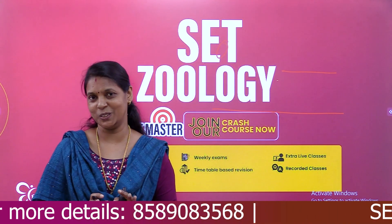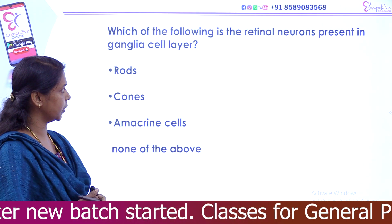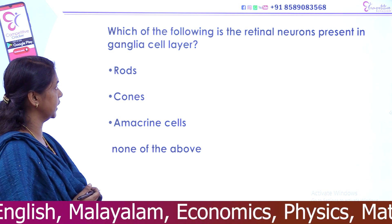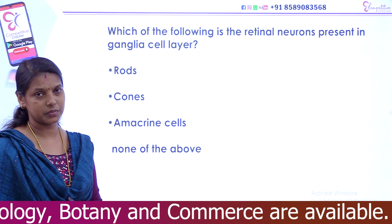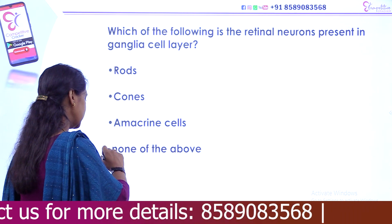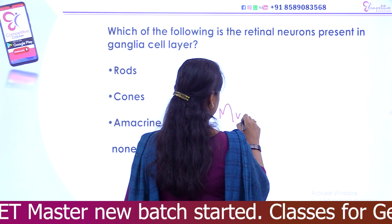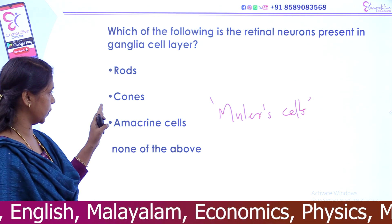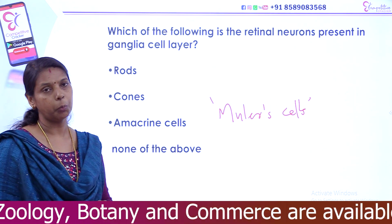Which of the following are the retinal neurons present in the ganglion cell layer? Options: rods, cones, amacrine cells, or none of the above? Rods and cones are photoreceptor cells — they are not at the ganglion cell layer. Amacrine cells are also not located there. Muller cells are also not in the ganglion cell layer. The correct answer is none of the above.